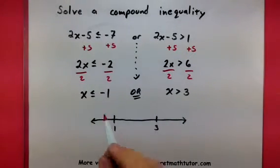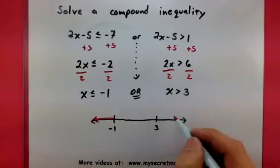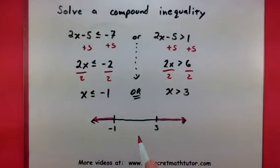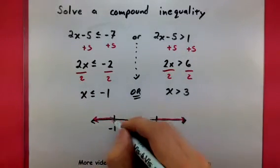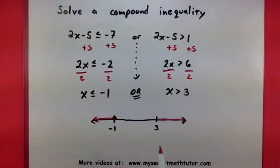I'm going to shade in everything less than negative 1 and I'll shade in everything greater than 3. Now since it says or equals to negative 1, I'm going to make that a nice solid include the negative 1 point.